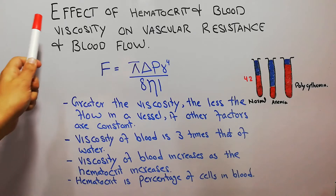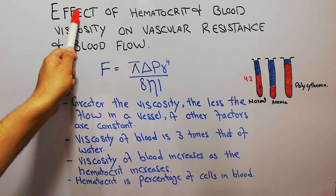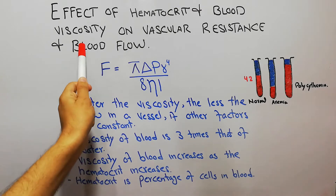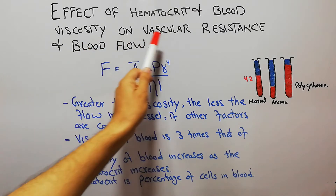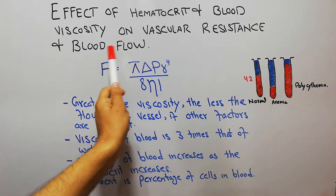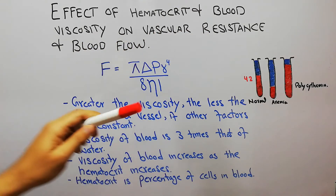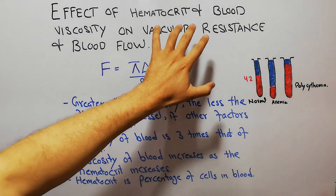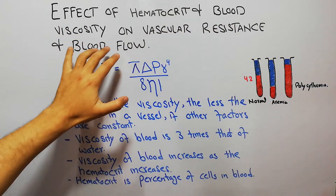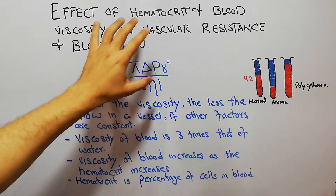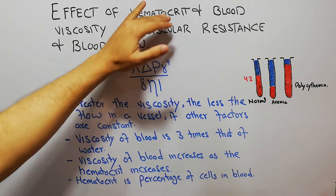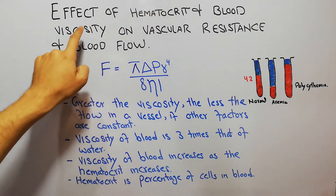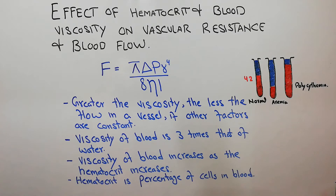Today we are going to discuss the effect of hematocrit and blood viscosity on vascular resistance and blood flow — specifically what will happen to vascular resistance and blood flow with an increase or decrease in hematocrit and viscosity of the blood.